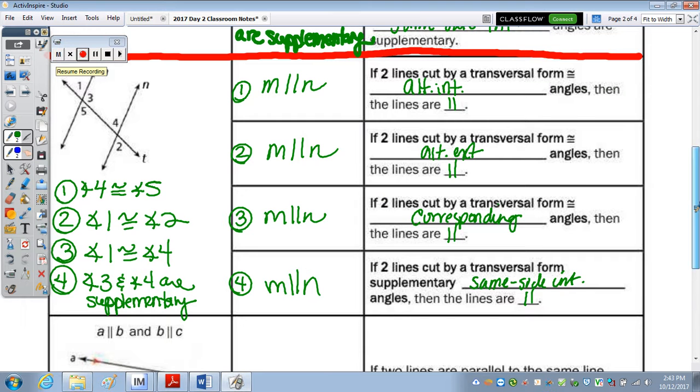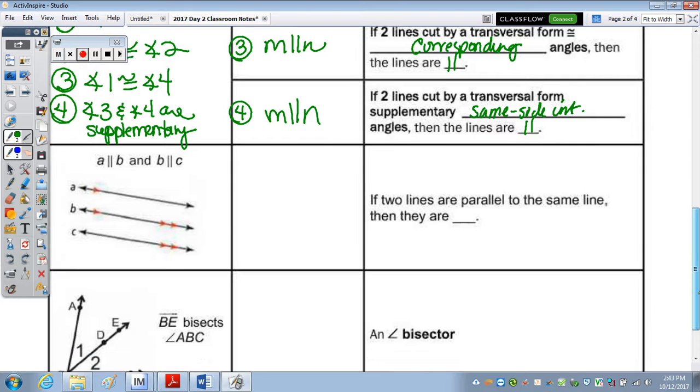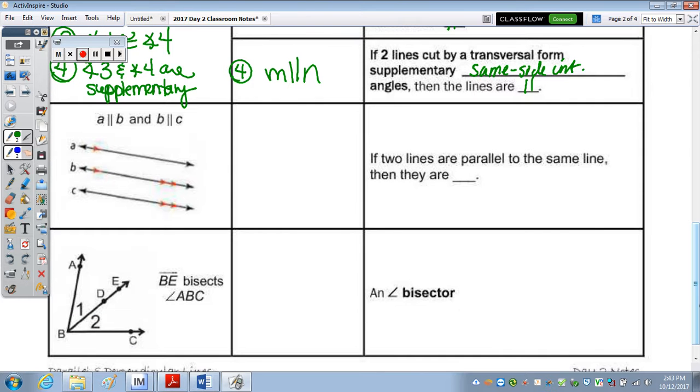In the last two, because A is parallel to B, and B is also parallel to C, then we know that A is parallel to C. And that's because if two lines are parallel to the same line, then they are also parallel.